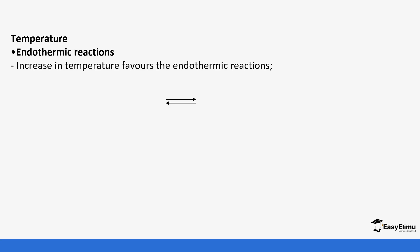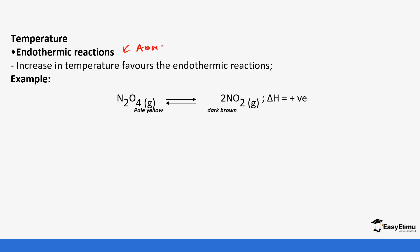Endothermic reactions: if you increase temperature, it favors these endothermic reactions. When I talk about an endothermic reaction, I'm talking about the reaction that absorbs energy from the surroundings or from the environment, and in the process that energy is used up in the reaction. Their energy change is always positive. So if you increase temperature it means you are able to favor them because they need to absorb more — you give them access to that energy.